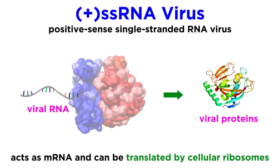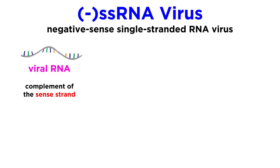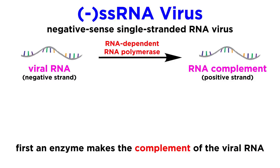The RNA can act as mRNA and be directly translated in the ribosomes of the host cell. With a negative strand, this will act as the complement of what would be the sense strand, so the virus must also contain an enzyme called RNA-dependent RNA polymerase that can use the negative strand to generate the positive strand through complementary base pairing.